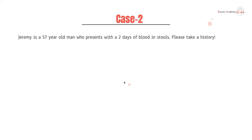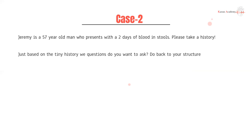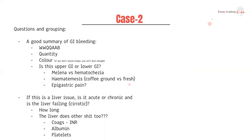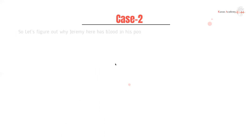Case two: Jeremy is a 57-year-old man who presented with two days of blood in stools. Based on this presentation, what are you going to want to ask? Start with the WWQQA — all the things mentioned earlier — plus questions specific to GI bleeding.